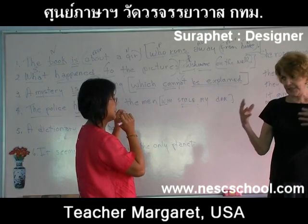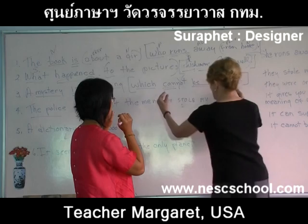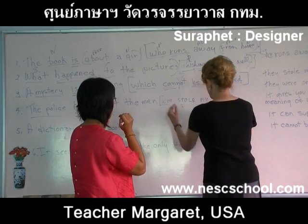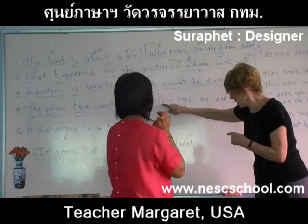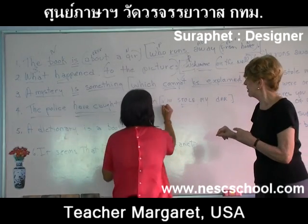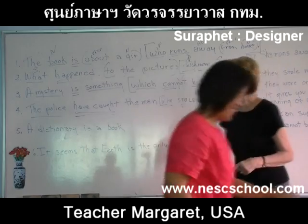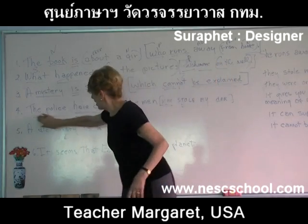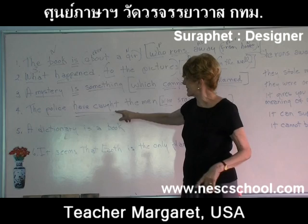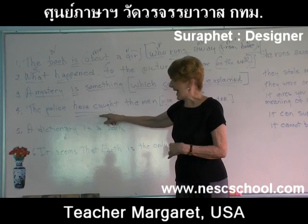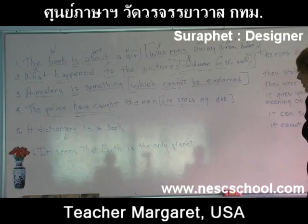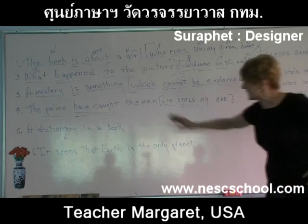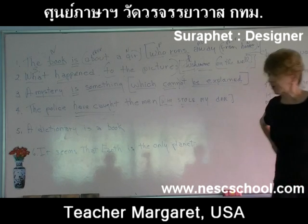The subject and the verb of the dependent clause have to stay in here. So what's the subject of 'stole'? Underline that once. And in the main independent clause, the verb is 'have caught' and the subject is 'police'. 'Police have caught the men who stole my car.' It's a complex sentence — it has an independent clause and a dependent clause.